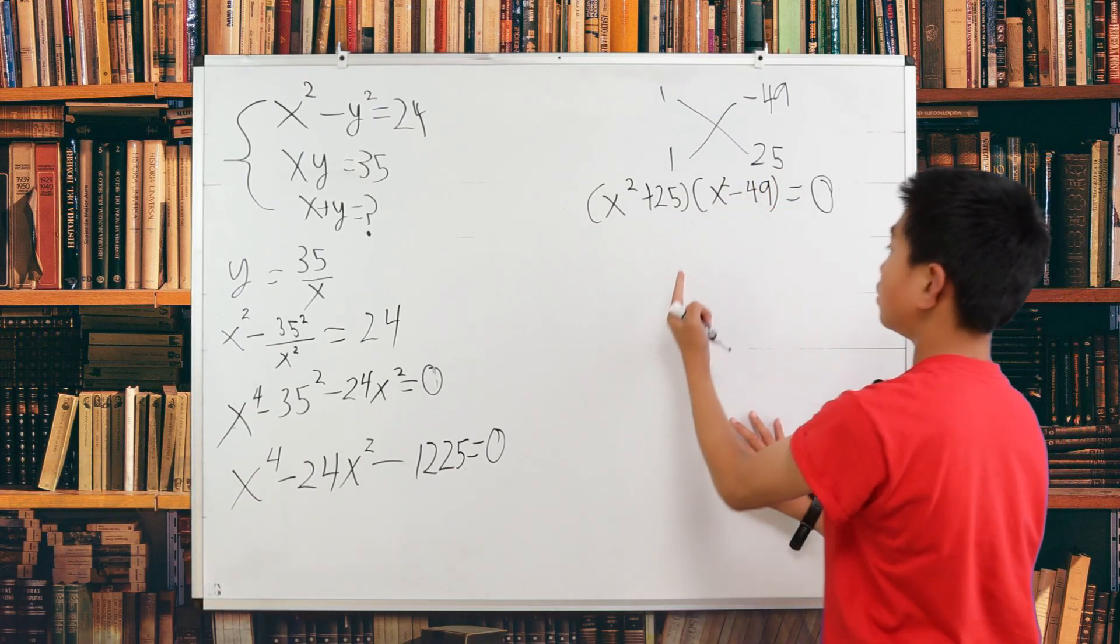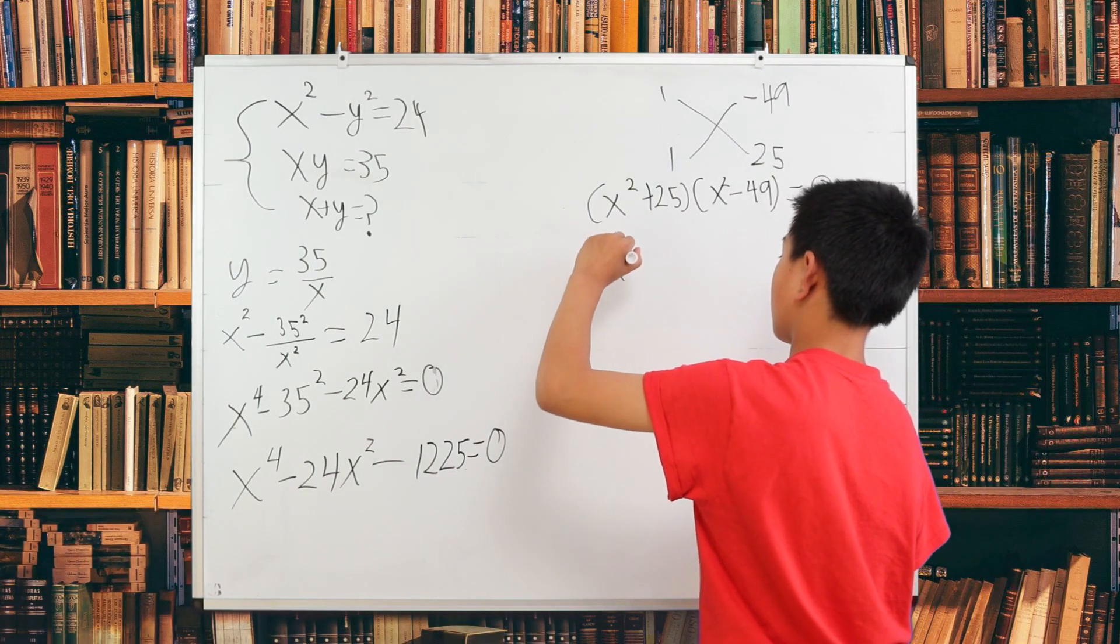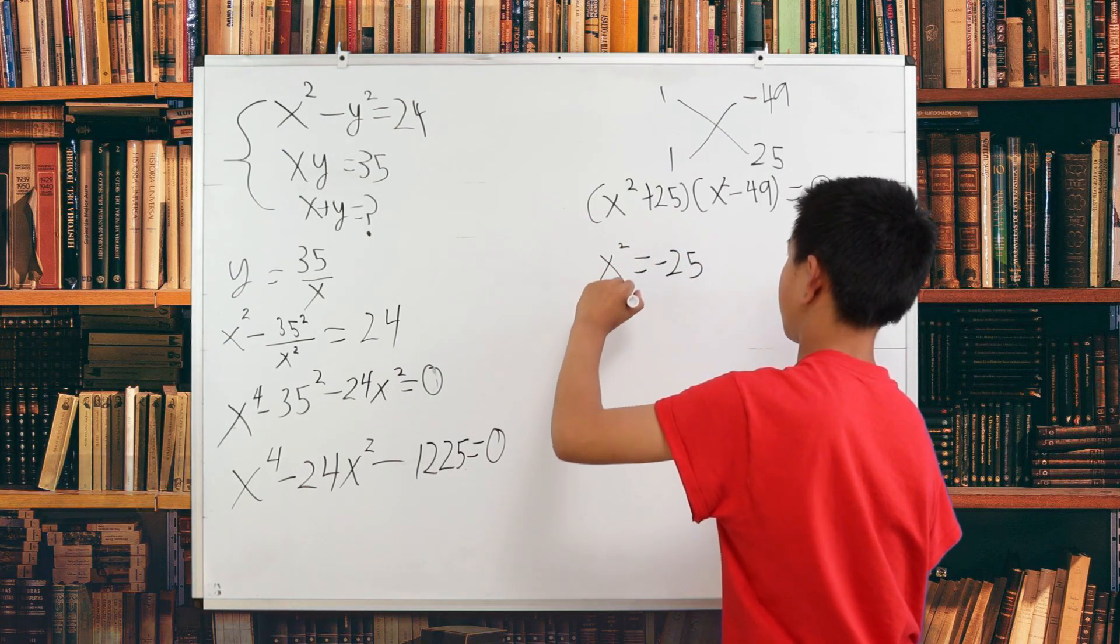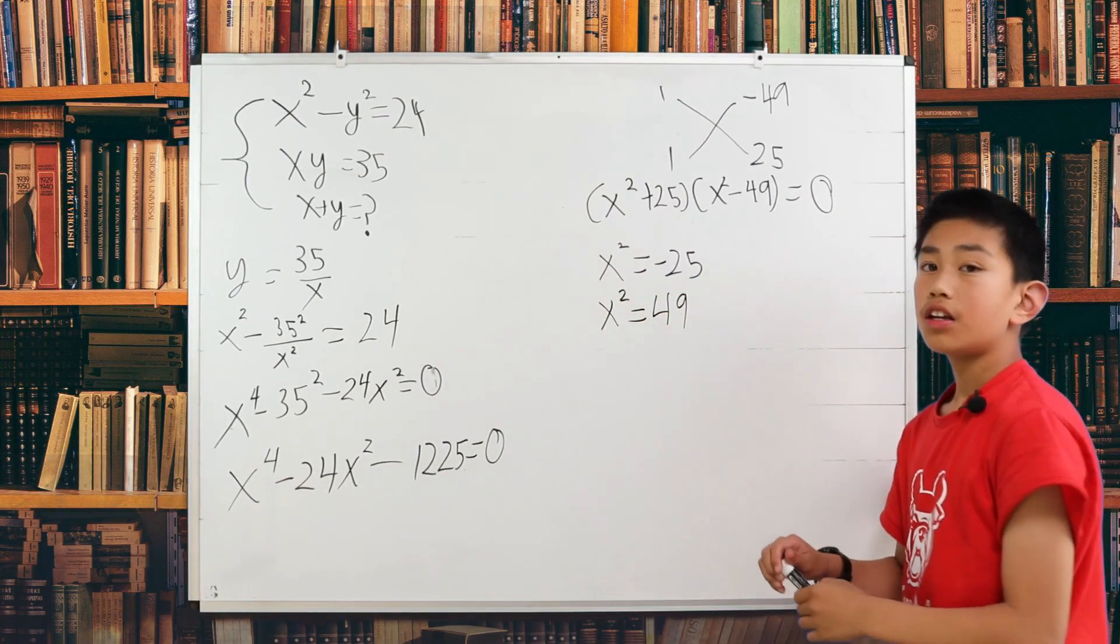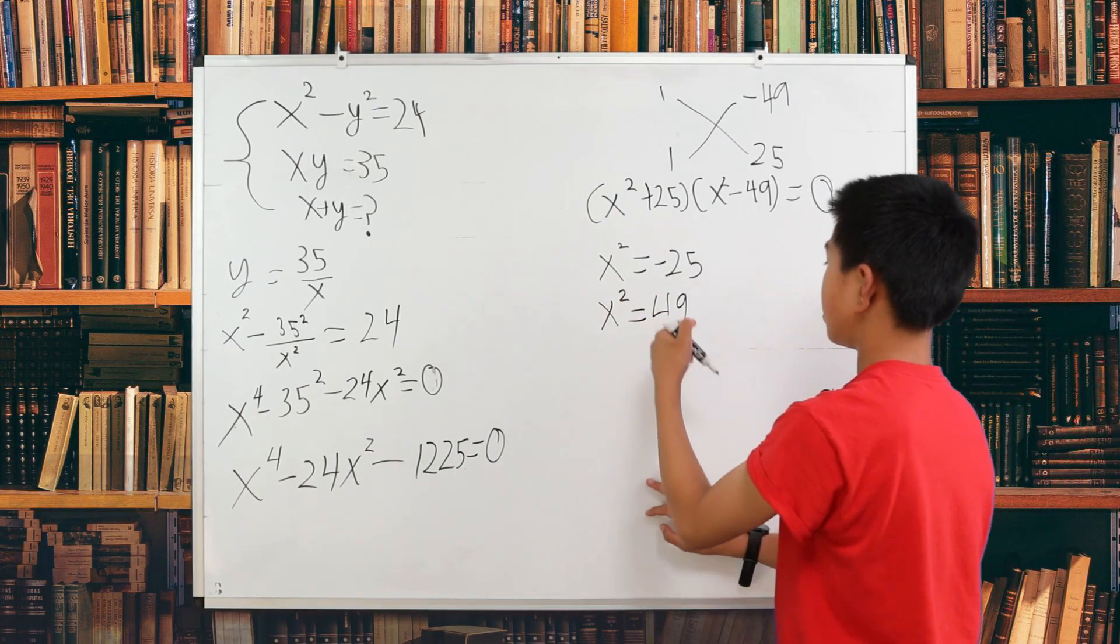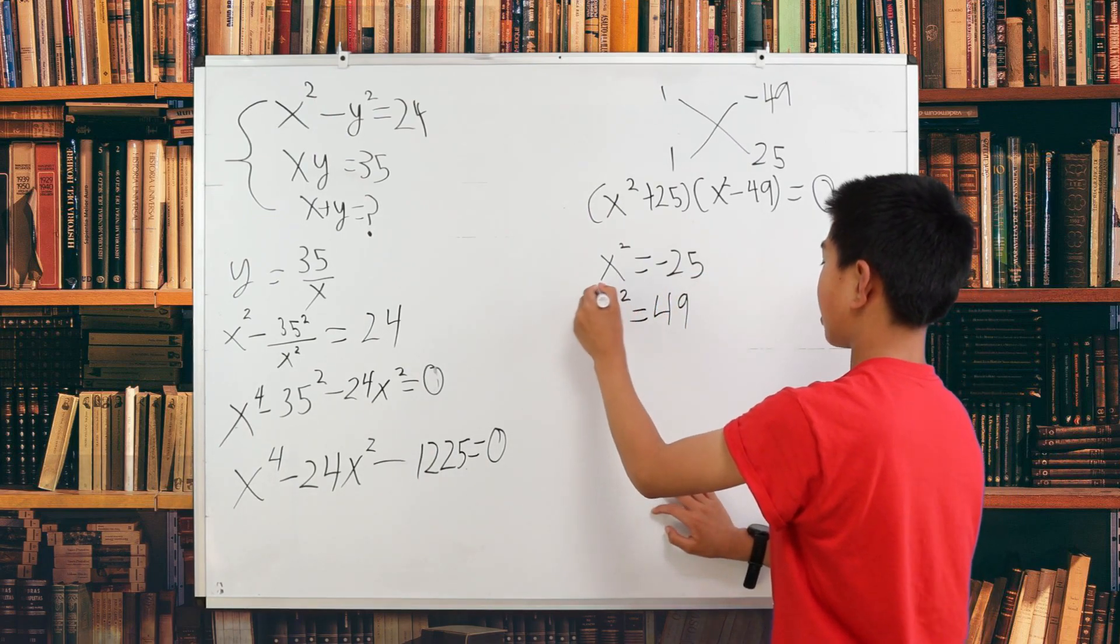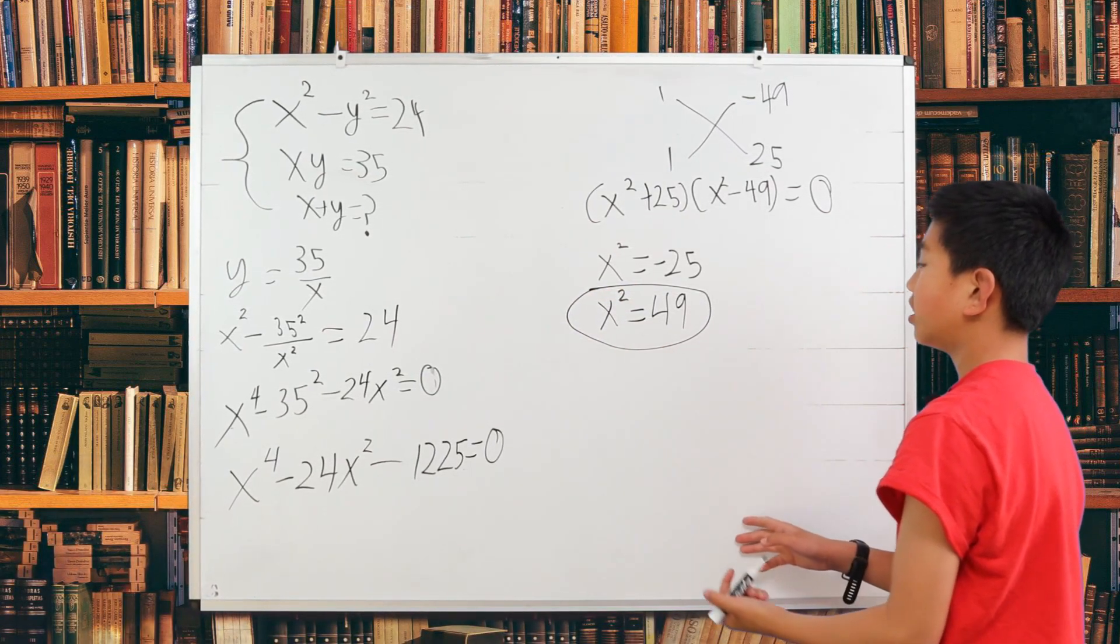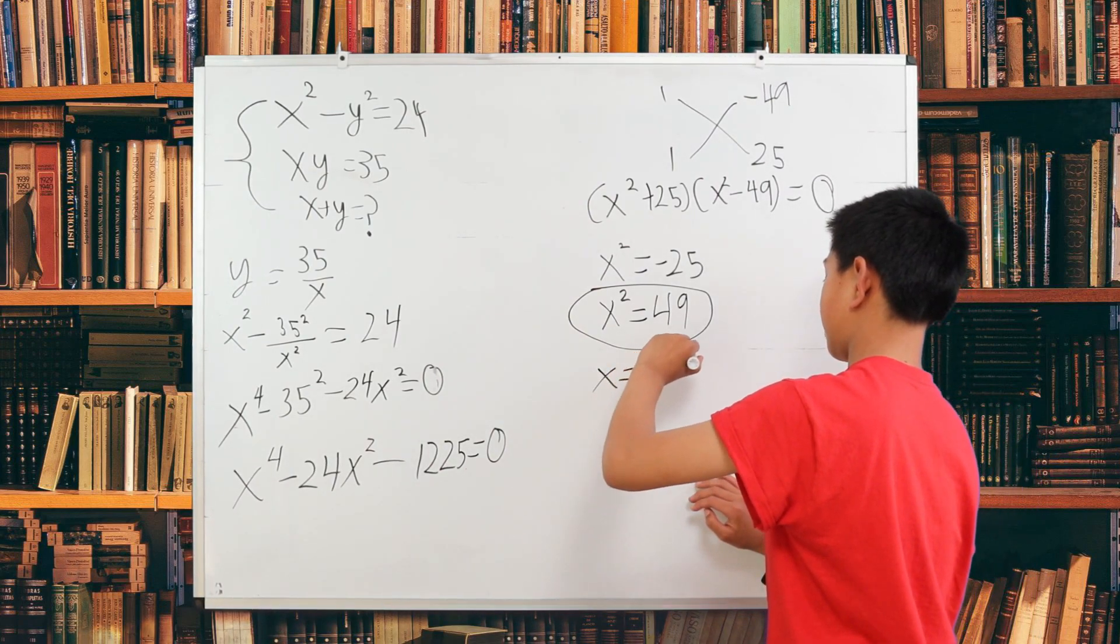Now we have two answers here, where x squared is equal to negative 25 and x squared is equal to 49. We know that this first value of x squared will not work because it's a negative and a negative cannot be square rooted. So our only correct answer is x squared is equal to 49. And according to that logic, x is equal to positive or negative 7.